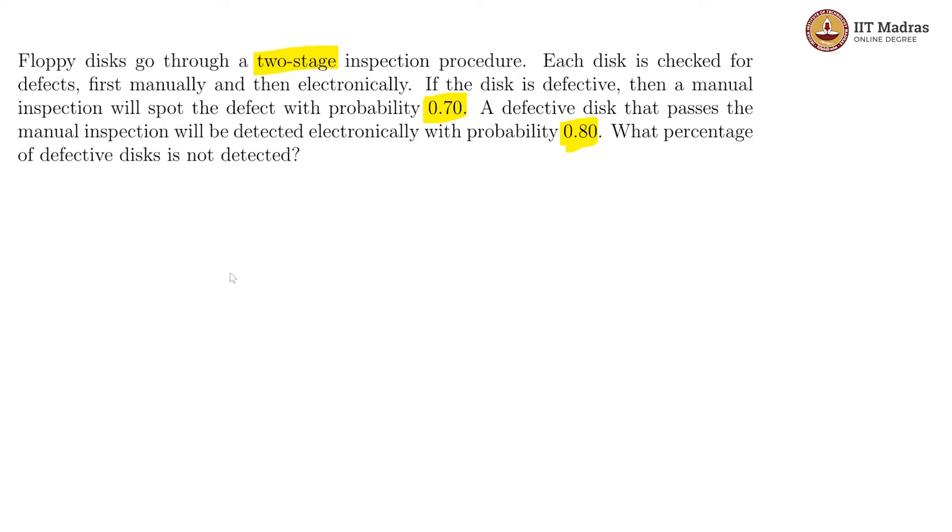So there is a two-stage process, one is manual and the other is electronic. And in the first case, we are saying that the disk is not detected by these two stages. So the probability for that in the manual is 0.3 and the probability for that in the electronic stage is 0.2.